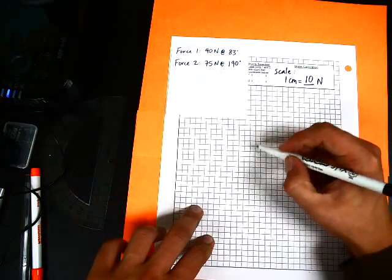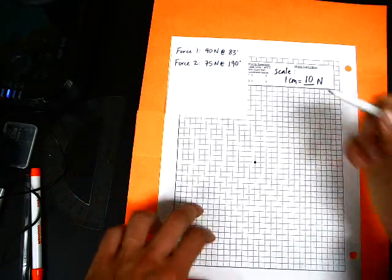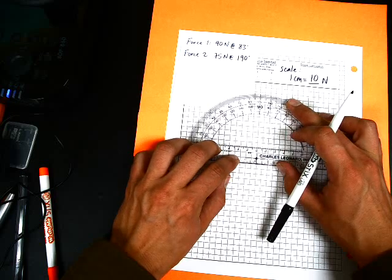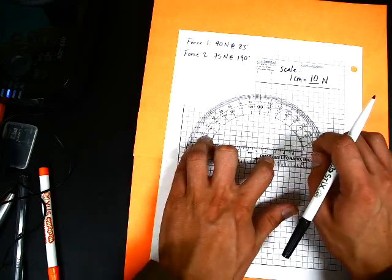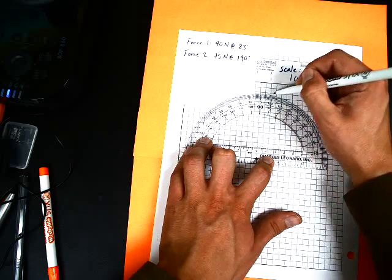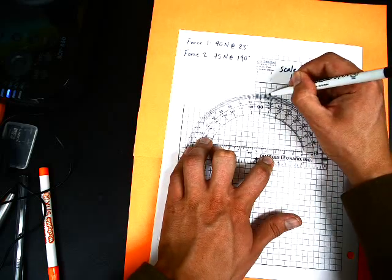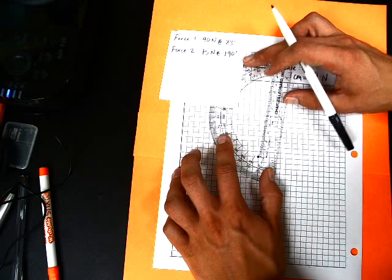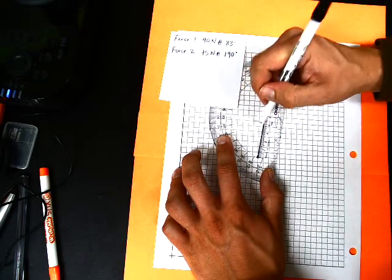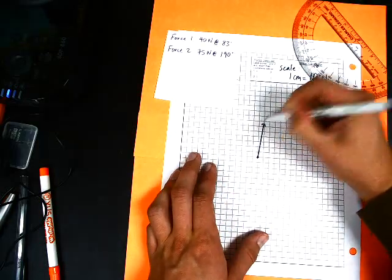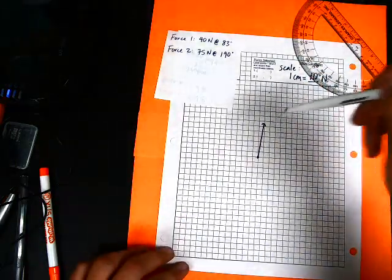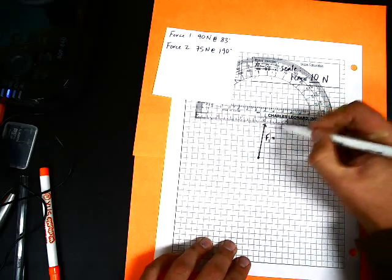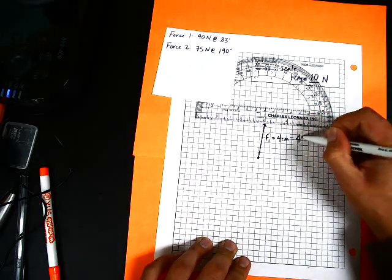I'm going to go ahead and draw my dot to start off with and measure the first angle out, lining up our protractor. Make sure this is nice and neat. We have 83 degrees, right there. 40 newtons, so this is going to be 4 centimeters. From the end of this one, we measure our second one. Let me label this F1 equals 4 centimeters long, which represents 40 newtons.